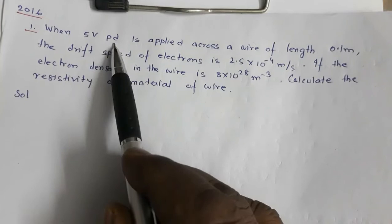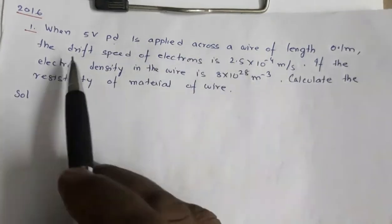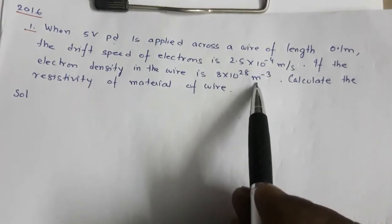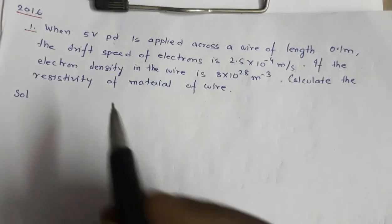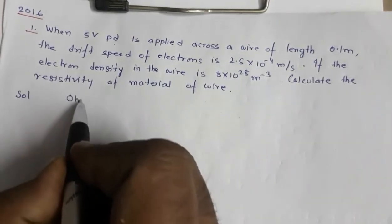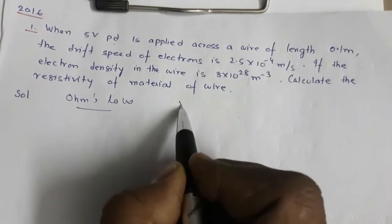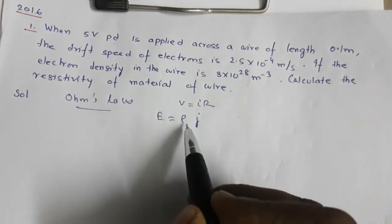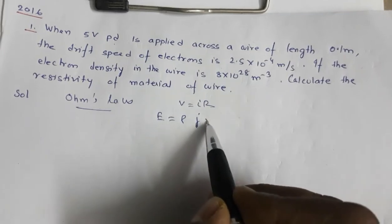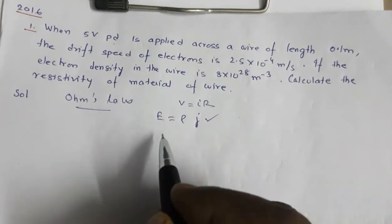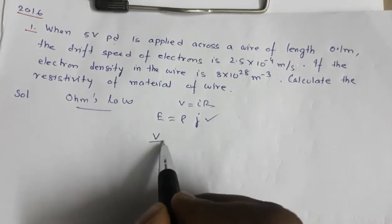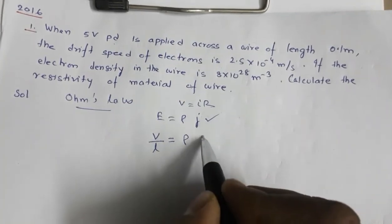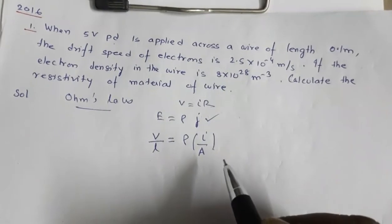Moving to 2016: when a 5 volt potential difference is applied across a wire of length 0.1 meter, the drift speed of electrons is 2.5 × 10⁻⁴ m/s. Electron density is 8 × 10²⁸ per m³. Calculate the resistivity. We use Ohm's law in the form E = ρj, where E is electric field strength (potential drop per unit length), ρ is resistivity, and j is current density (current per unit area).